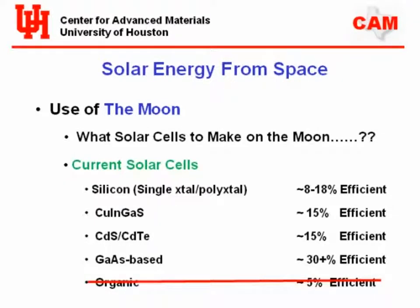What kind of solar cells should we make on the Moon? Since you don't have to deal with an atmosphere absorbing certain frequencies of light, you can retune the solar cells to be more efficient — something called air mass zero. Air mass zero means there's no atmosphere to absorb the light, so you get a better blackbody radiation curve. You can better tune your solar cells for that. On the Moon, there are no organics — only parts-per-billion carbon — so forget organic cells.